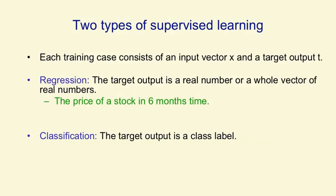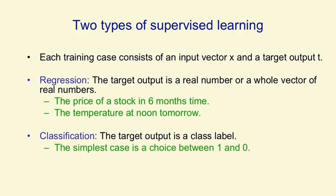Supervised learning itself comes in two different flavours. In regression, the target output is a real number or a whole vector of real numbers, such as the price of a stock in six months' time or the temperature at noon tomorrow, and the aim is to get as close as you can to the correct real number. In classification, the target output is a class label — the simplest case is a choice between one and zero, between positive and negative cases. But we can have multiple alternative labels, as when we're classifying handwritten digits.